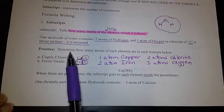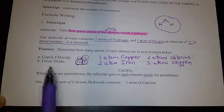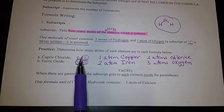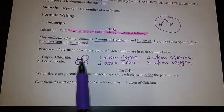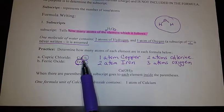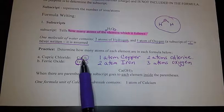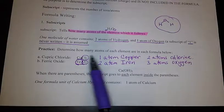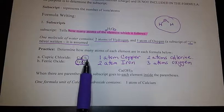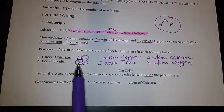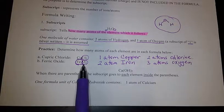Let's do the practice: determine how many atoms of each element are in each formula below. For cupric chloride, the first element is copper Cu. Since there isn't a number next to it, we assume one atom of copper. We have Cl2, meaning there are two atoms of chlorine — that subscript two belongs with the chlorine. For ferric oxide, you have two atoms of iron and three atoms of oxygen.